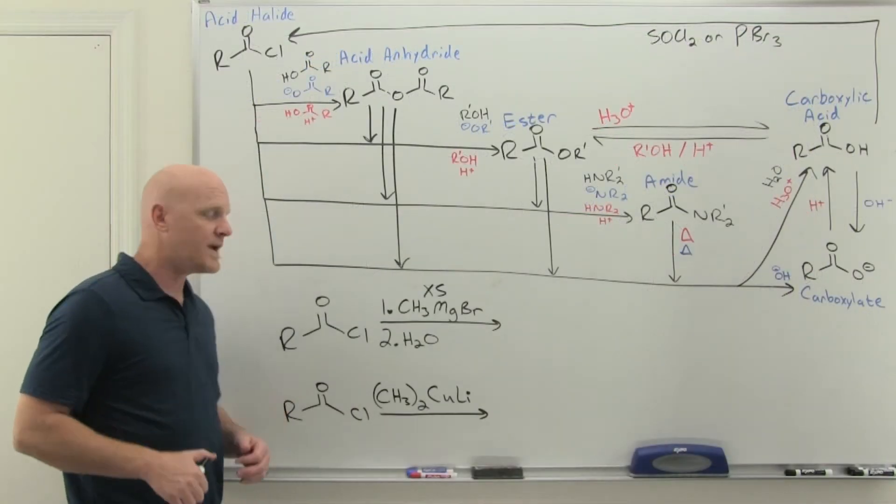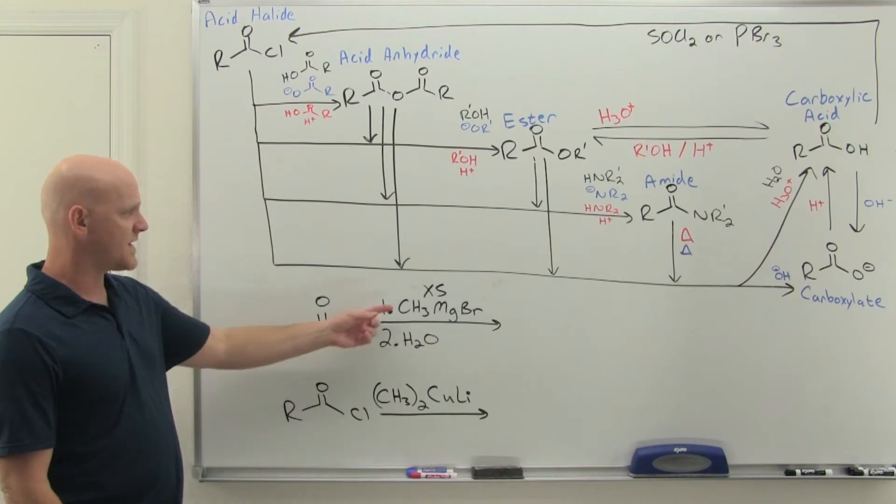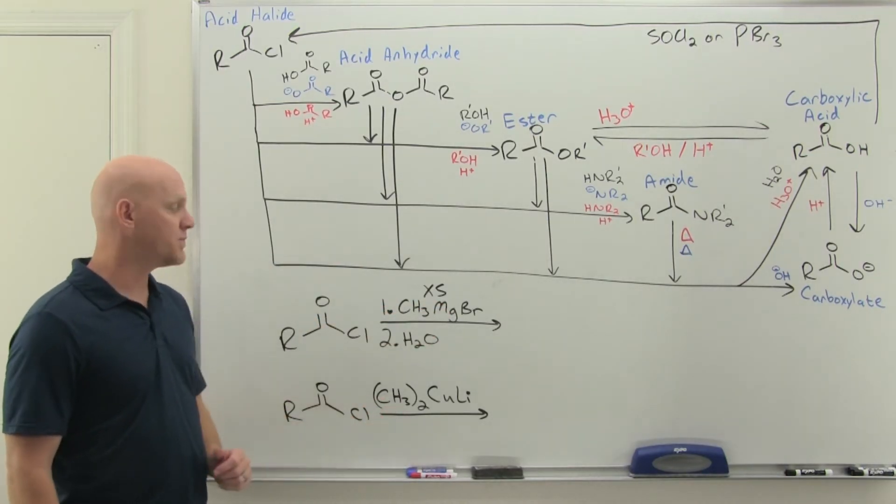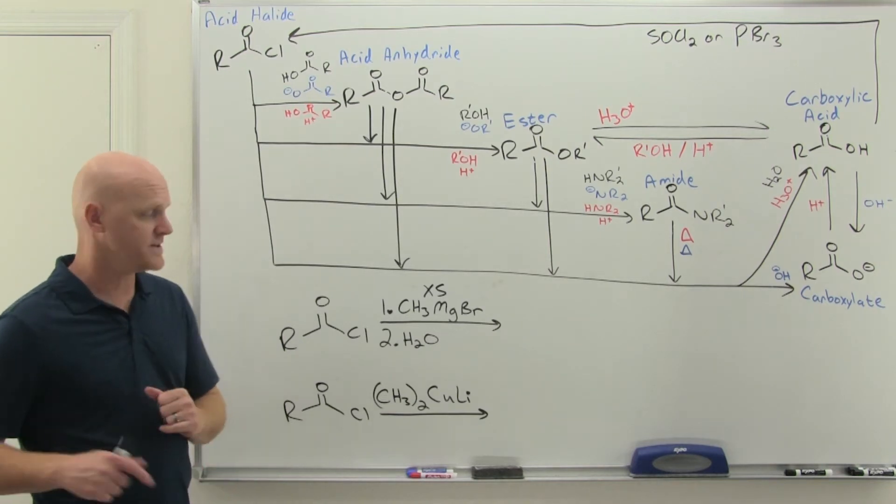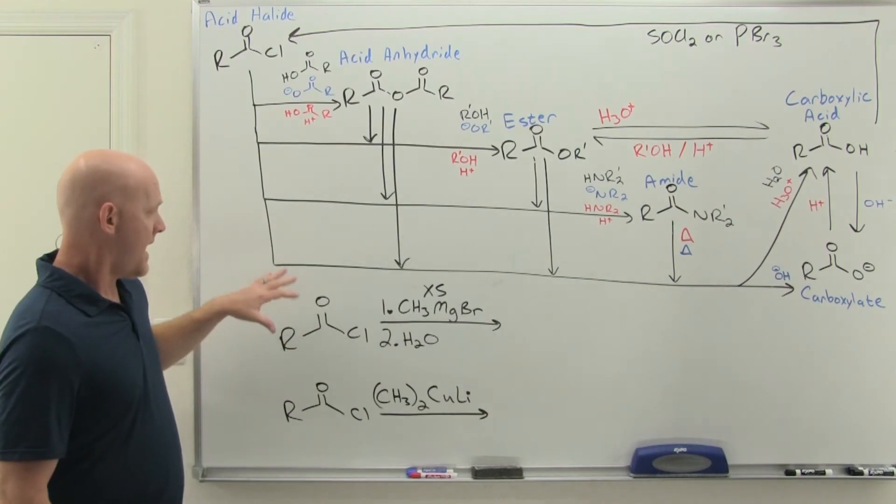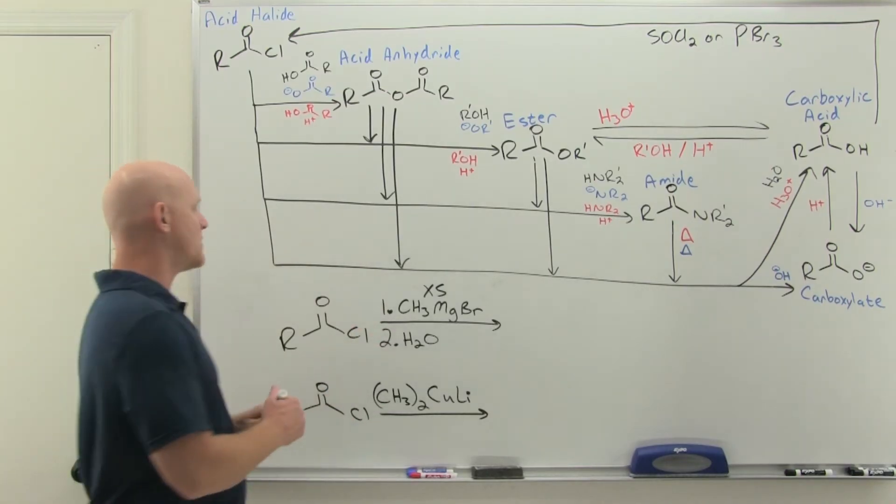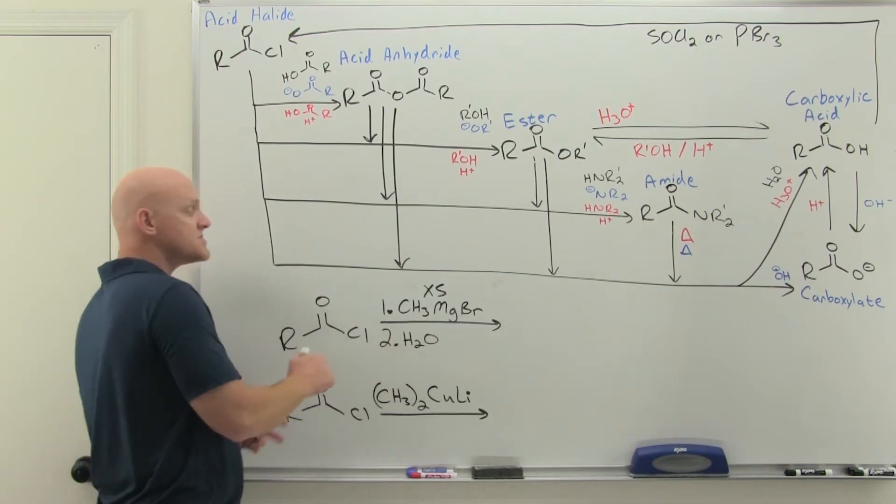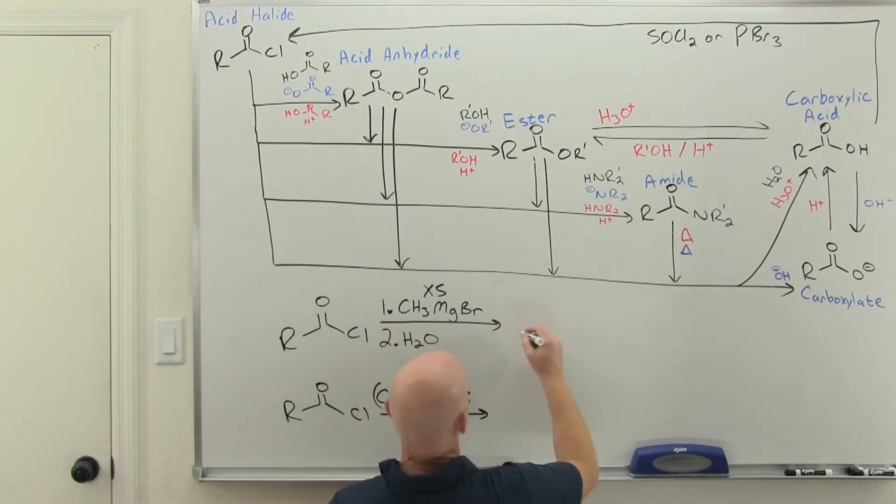Now we'll look at the two reactions with organometallics: the Grignard reagent (organomagnesium halide) and the Gilman reagent (organocuprate or lithium dialkyl cuprate). The Grignard is a stronger reagent. Initially, both of these form the ketone—the nucleophile in both cases simply replaces the chlorine, so that's the initial reaction in both cases.